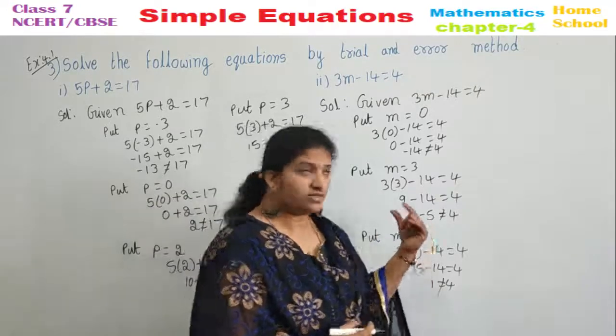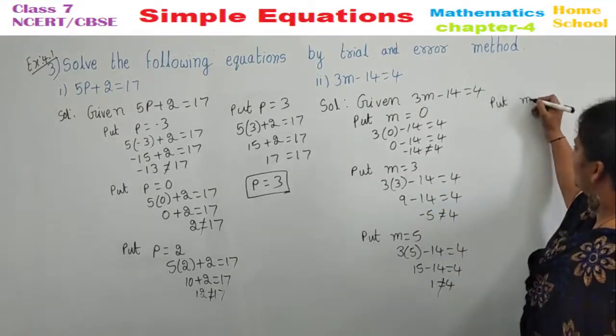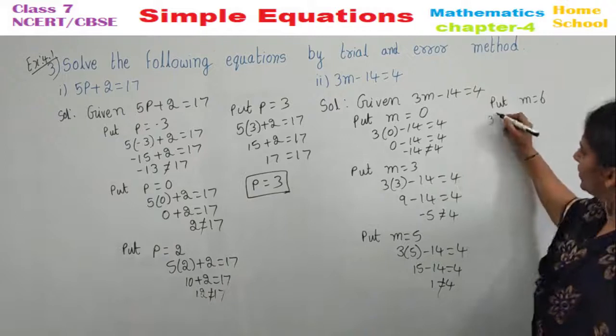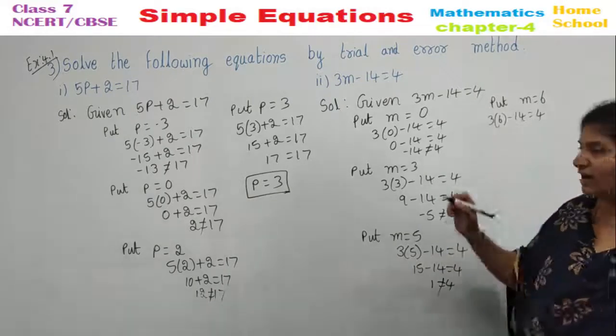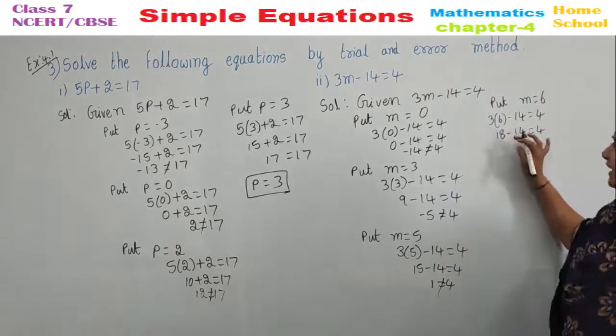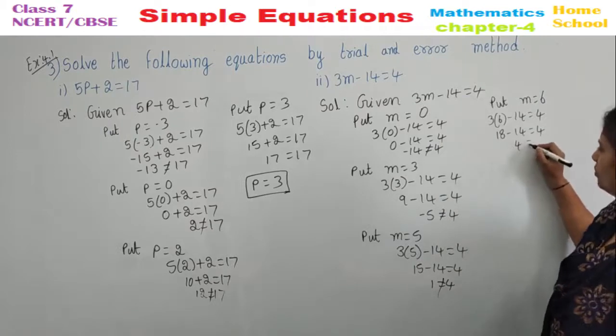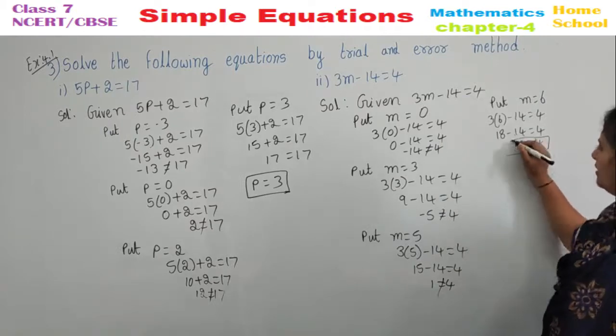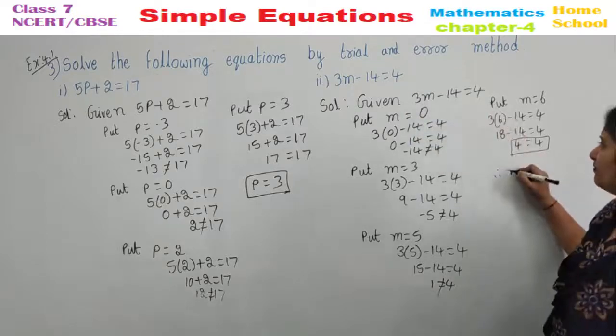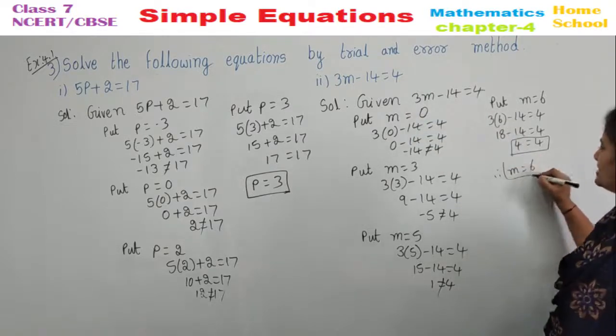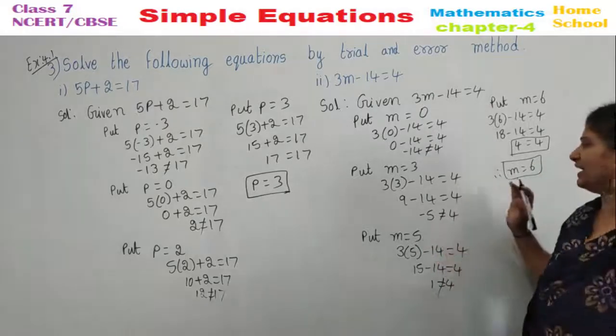Take M is equal to 6. Put M is equal to 6. 3 into 6 minus 14 equal to 4. 6, 3 is 18. 18 minus 14 equal to 4. 18 minus 14 will be 4. Yes, these two are equal. Therefore, M is equal to 6 is your answer. By trial and error method, we guess like this.